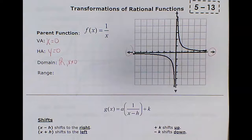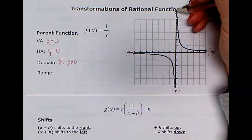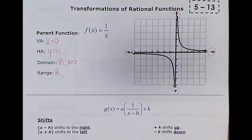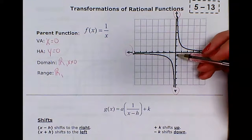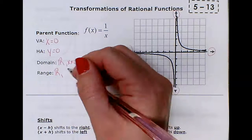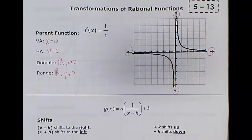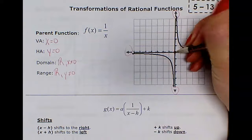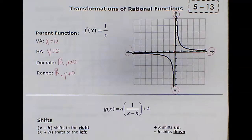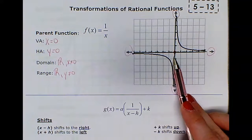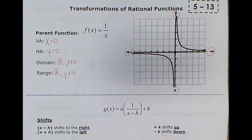For the range, we go from bottom to top with no boundary, so we start with all real numbers. Except we don't use 0 because there's a horizontal asymptote, so we take out y = 0. This is your parent function. The intersection of the asymptotes is at the origin — not a point on the hyperbola, but it marks the intersection and will become important today.